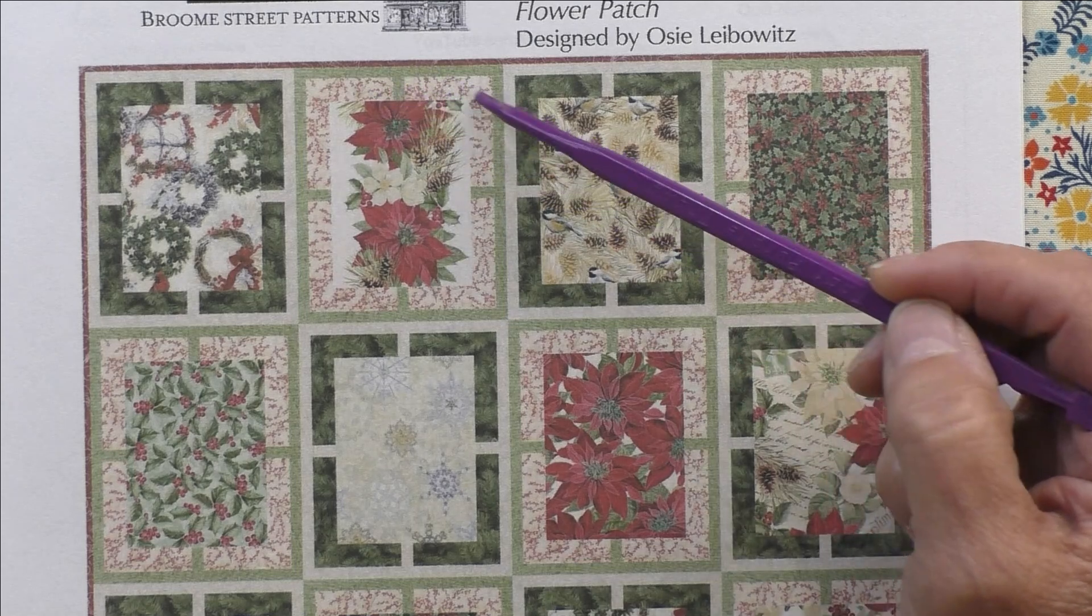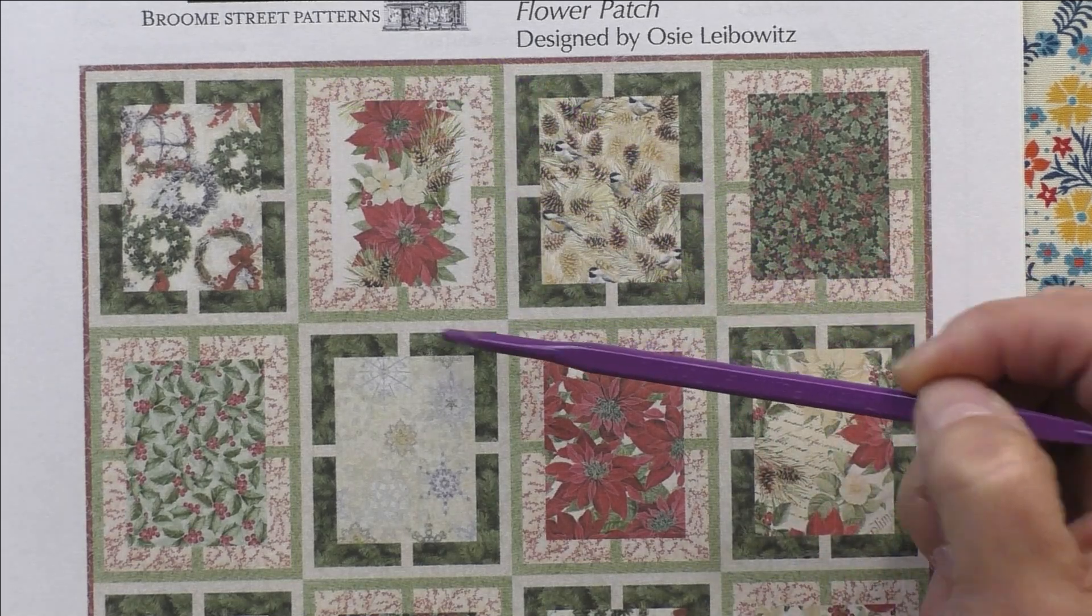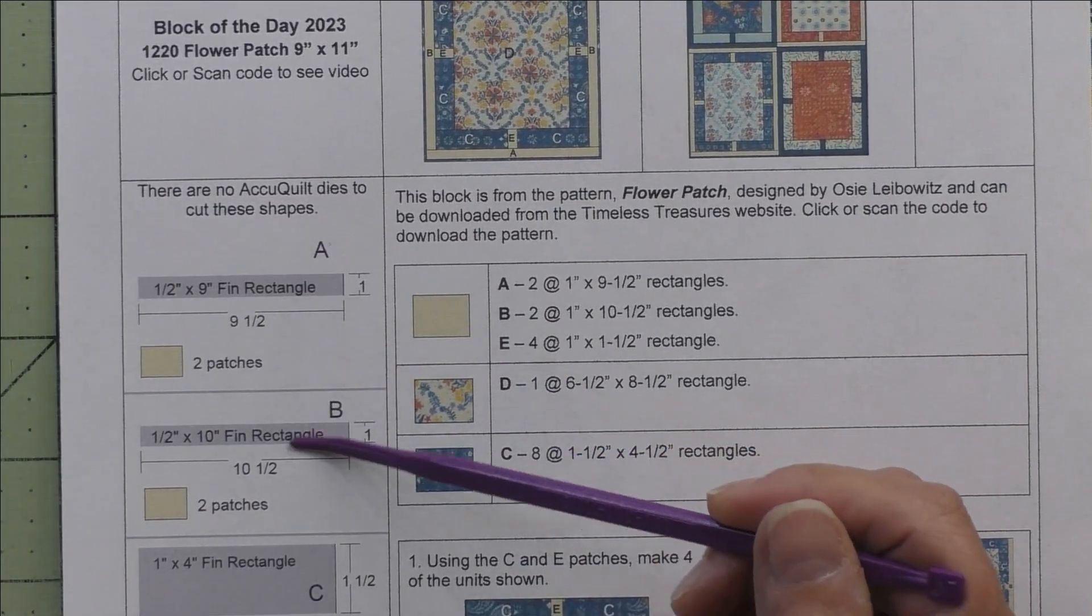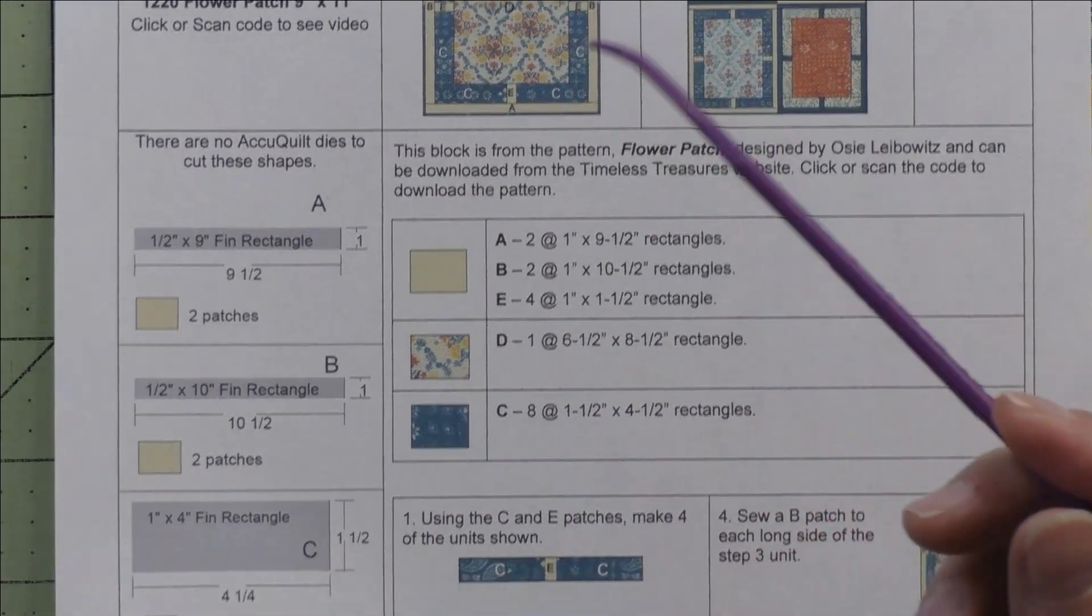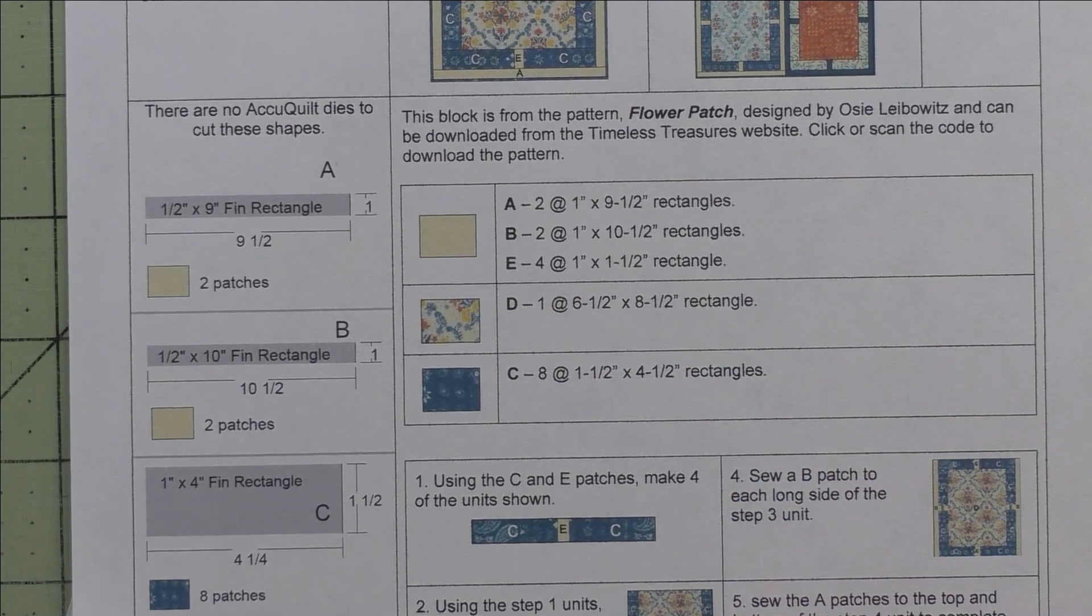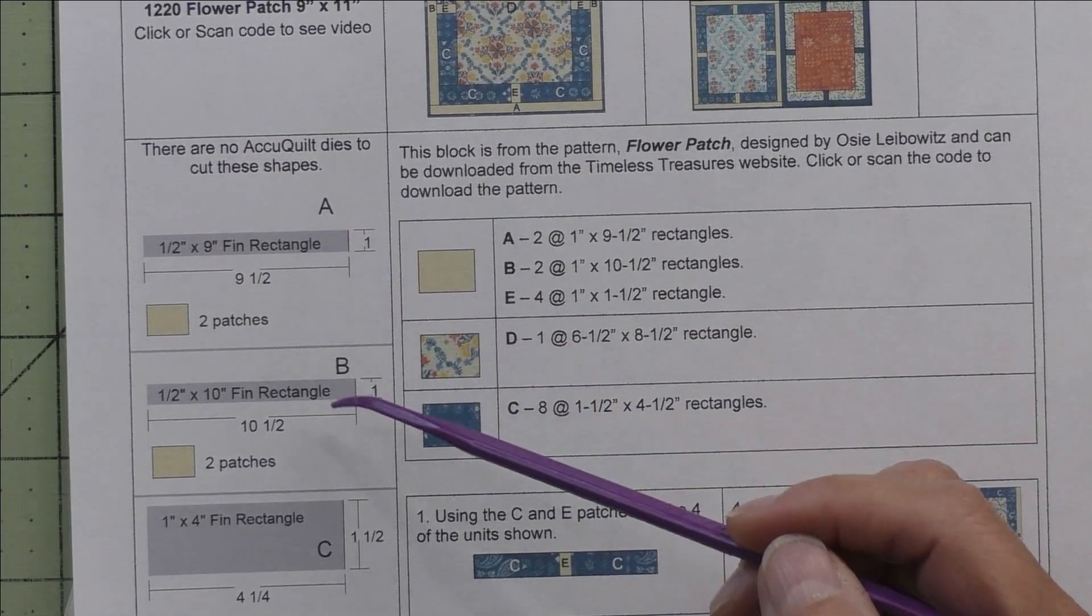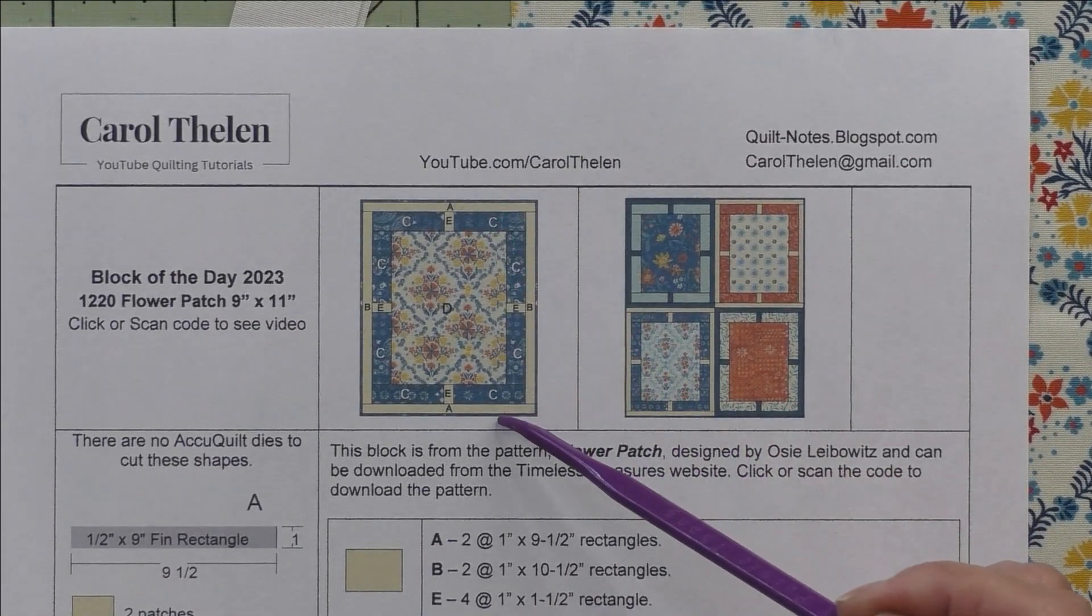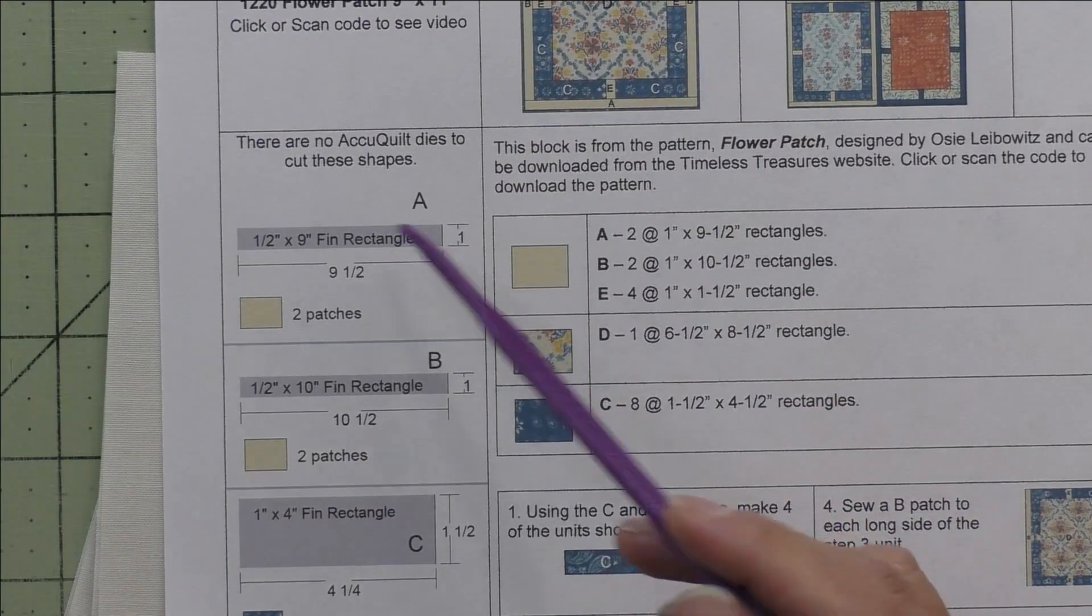There are no AccuQuilt dies that will cut these odd shapes, and we have five patches. Patches A and B are the little frames around the outside.